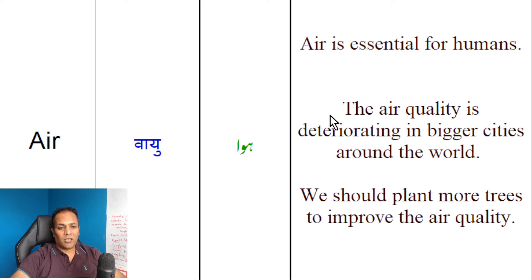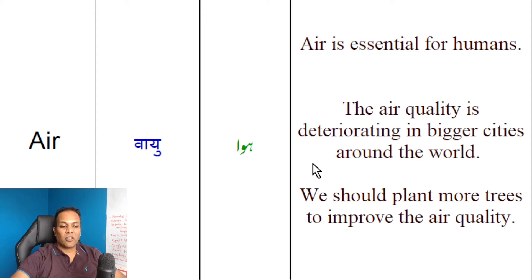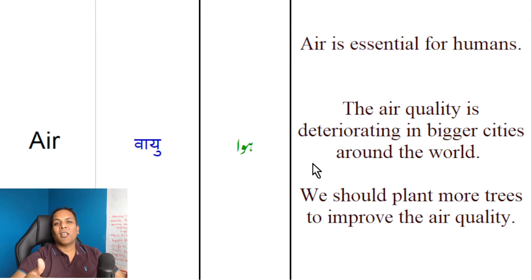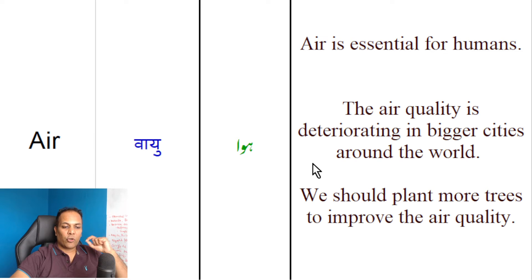Isi tarah hum yeh bhi keh sakte hain: 'The air quality is deteriorating in bigger cities around the world.' Ke dunya bhar mein, badey shahron mein, hawa ki jo quality hai, wo kharaab ho rahi hai, deteriorate ho rahi hai. The air quality is deteriorating in bigger cities around the world.